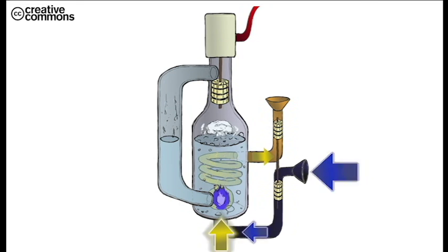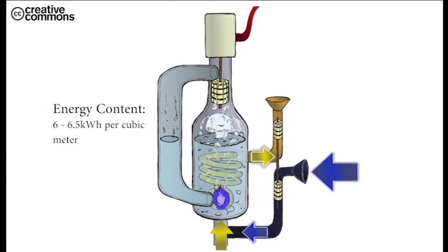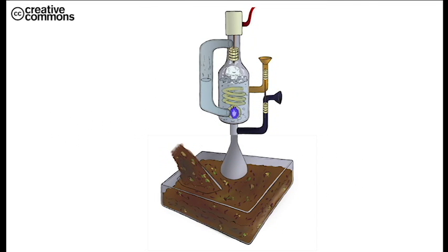The biogas produced has an energy content of about 6-6.5 kWh per meter cube, which will be slowly used to heat a tank of water. Our design uses readily available and very well-established technology, like the generator that draws power from the steam turbine.